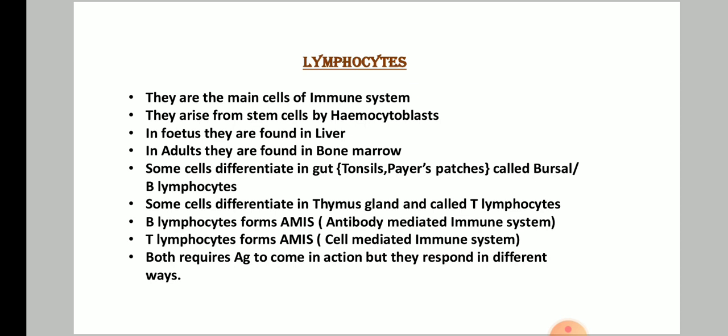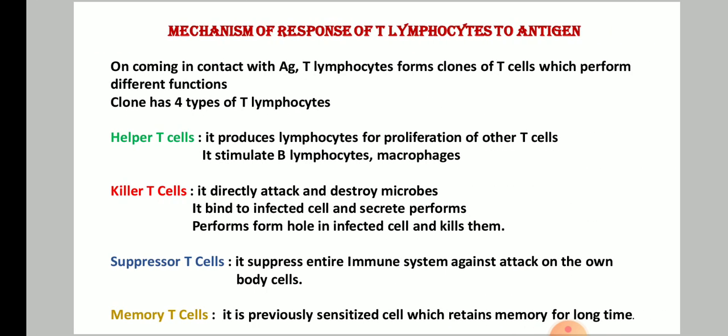Both B-lymphocytes and T-lymphocytes require an antigen to come into action. Once an antigen enters the body, T-lymphocytes start developing clones of T-cells. These clones perform different functions and consist of four types: helper T-cells, killer T-cells, suppressor T-cells, and memory T-cells.